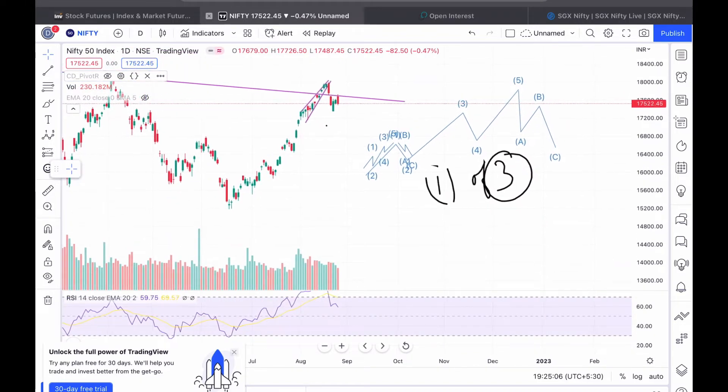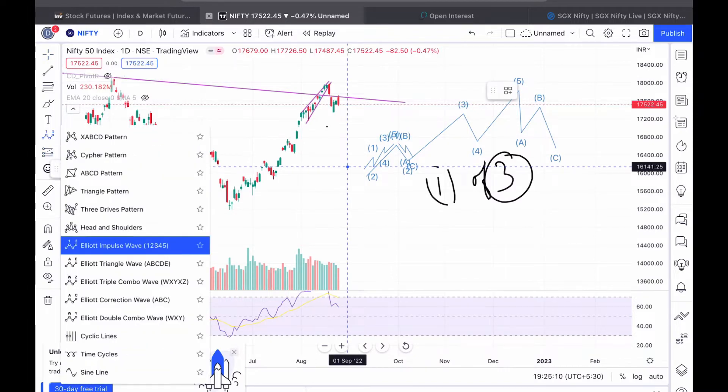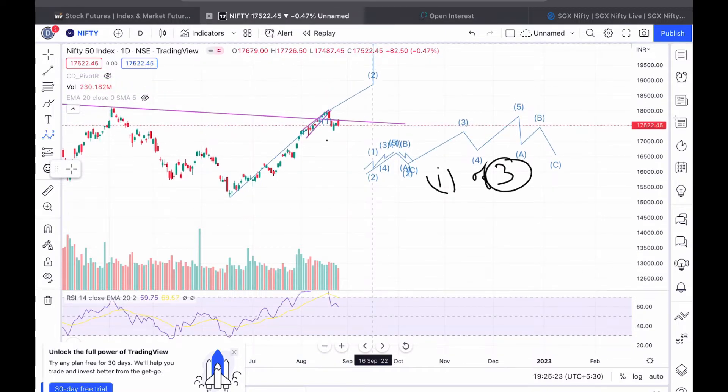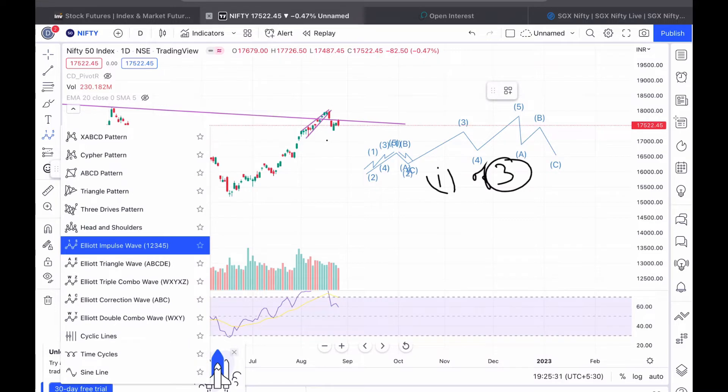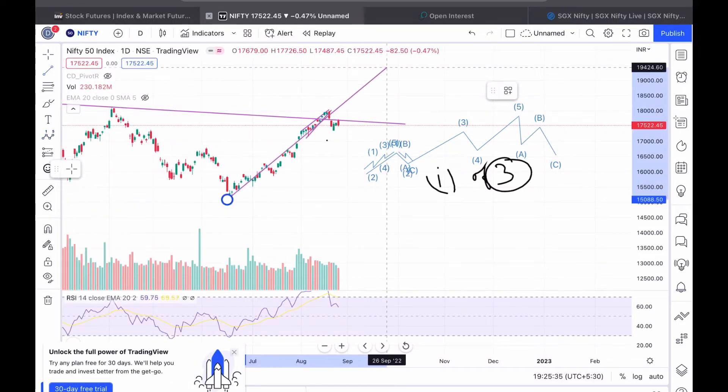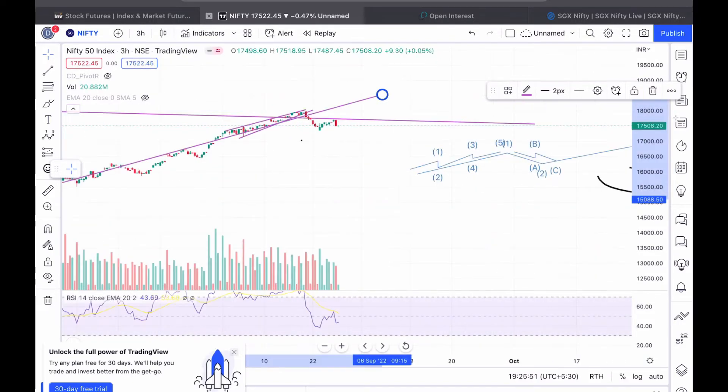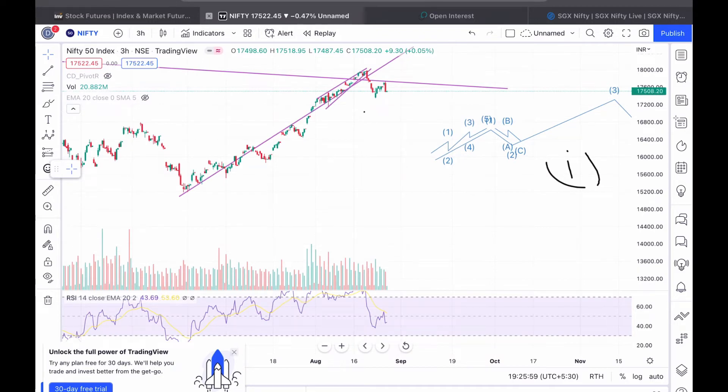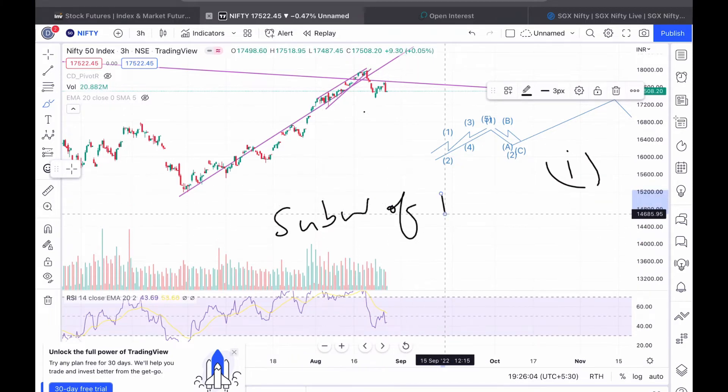It's still going on, it's not over yet. So I'll use a trend line to show. Suppose this wave is going till 18,500. I am saying suppose it's very predictive, I am not sure, but the price action, I will tell you how it's telling me that we are going till 18,500. Now we'll come to a time frame of say two hours. In two hours you will see the sub-wave of the.